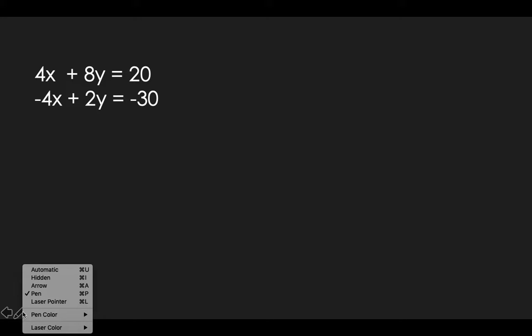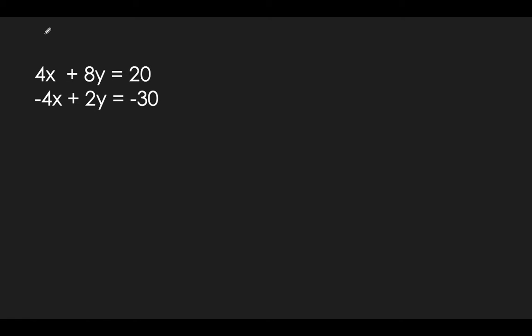In elimination, as the title sounds, you're trying to eliminate a variable. Our goal is to eliminate one variable to start with. What we're going to be doing is adding our two functions, but you've got to look — is there a variable that would cancel out or eliminate? If you look at the x's, you have a 4x and a negative 4x. 4x plus negative 4x would be 0x, so if you add these two equations, they cancel out — they eliminate.